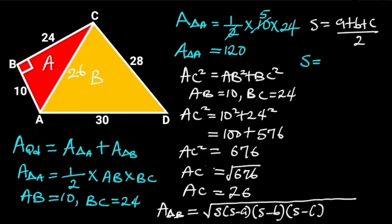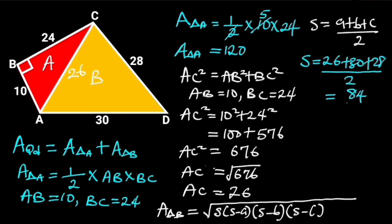To find S: S is equal to 26 plus 30 plus 28, all divided by 2. 26 plus 30 plus 28 is equal to 84. So we have 84 divided by 2, which is 42.